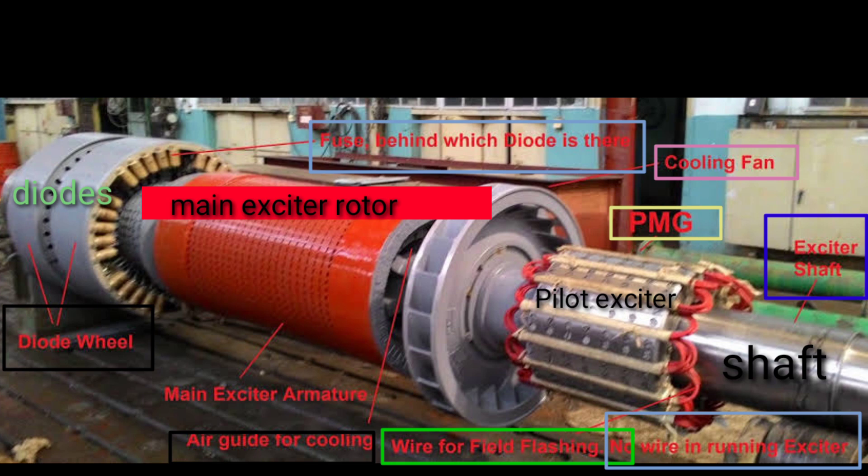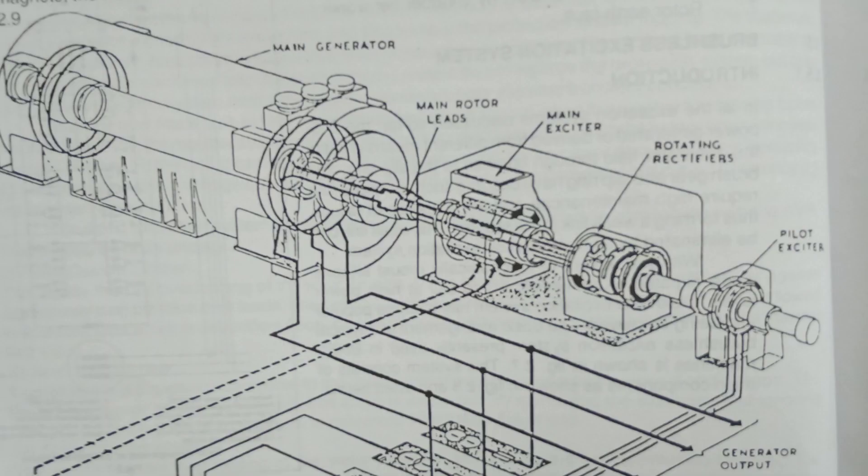This is the cooling fan for cooling the exciter as it is air-cooled. This is the full block and white diagram. This is the common shaft for rotors of main exciter, PMG, and free-wheeling diodes.